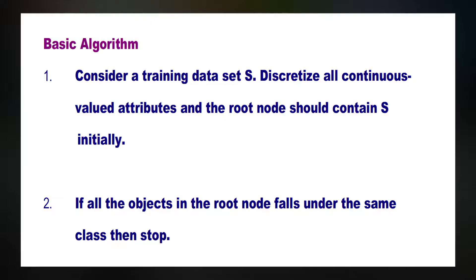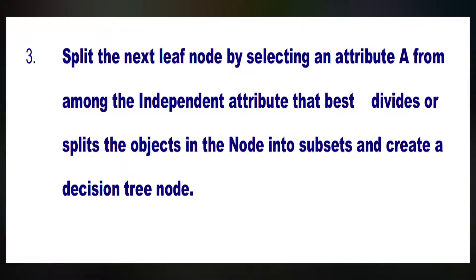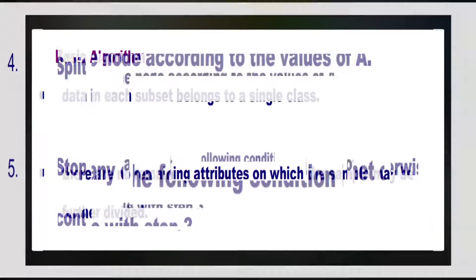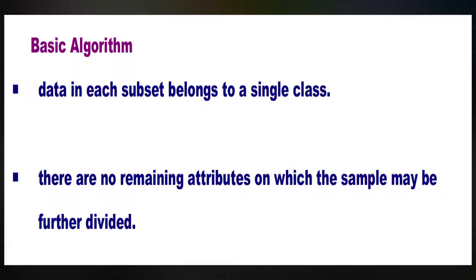Now we will see the basic algorithm. Consider a training data set S. Discretize all continuous valued attributes and the root node should contain S initially. If all the objects in the root node fall under the same class, then the iteration is stopped. Split the next leaf node by selecting an attribute A from among the independent attributes that best divides the objects in the node into subsets and create a decision tree node. Split the node according to the values of A. Stop if any of the following conditions is met, otherwise continue from step 3. The criteria for stopping is: data in each subset belongs to a single class, or there are no remaining attributes on which the sample may be further divided.